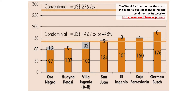This next slide shows a financial comparison of the cost of a connection to a traditional sewer system and to a condominial system in selected communities in Latin America. The connection to a traditional system is estimated to cost about $276 US dollars compared to $142 US dollars for a connection to a condominial system.